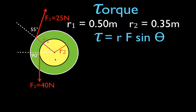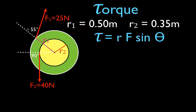To calculate the torque for each force we need to identify r, F, and theta. r is the straight-line distance from the axis of rotation to the point of application of the force. Since each force is applied at the edge of its respective wheel, r equals each wheel's radius. The forces are 25 newtons and 40 newtons. Theta is the angle between the radial line and the force vector — 55 degrees for force one and 90 degrees for force two.